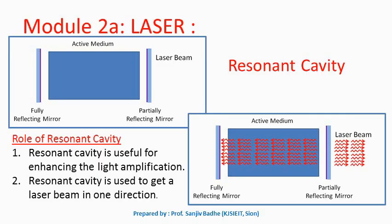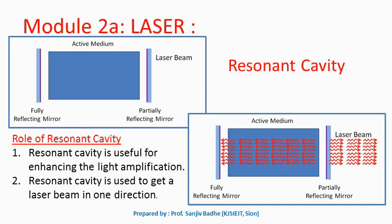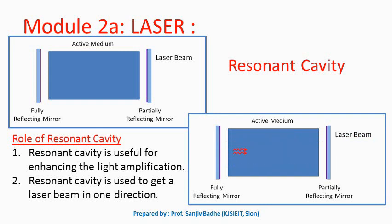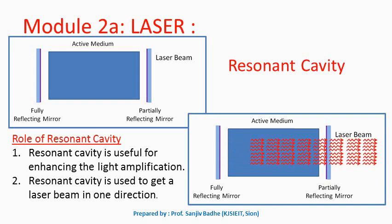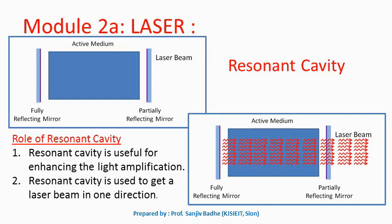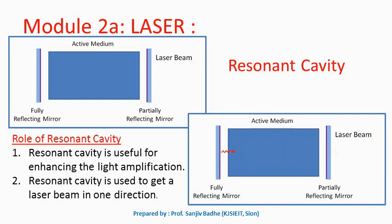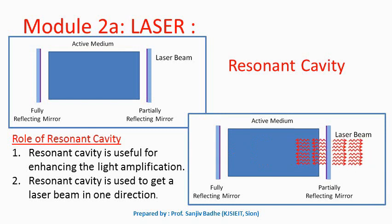The important properties of the laser beam are that it should be monochromatic, characterized by a single frequency. This will be ensured because the radiation results from transitions between only two certain energy levels, so it will be monochromatic.